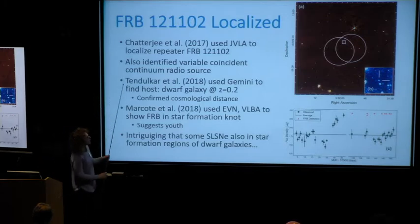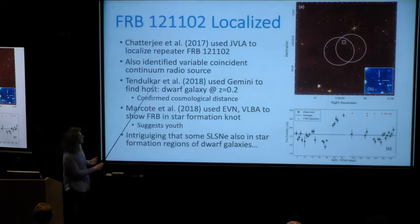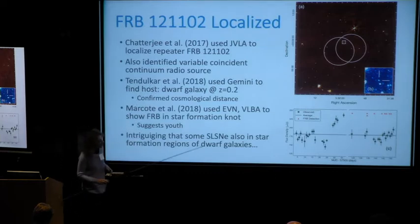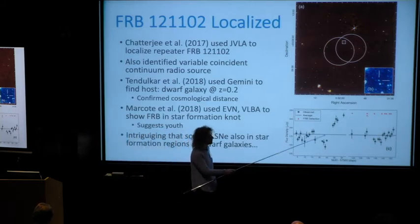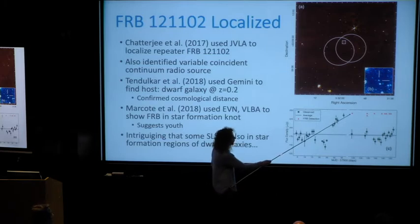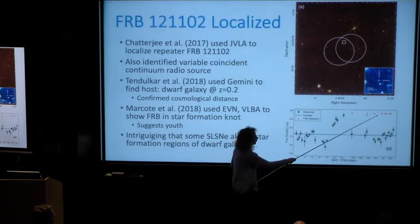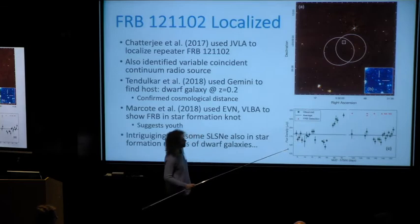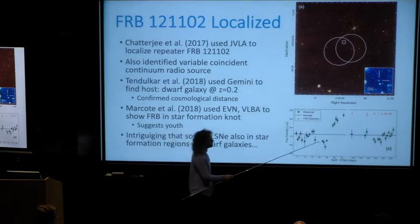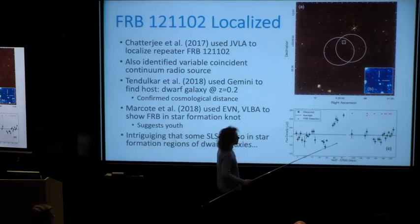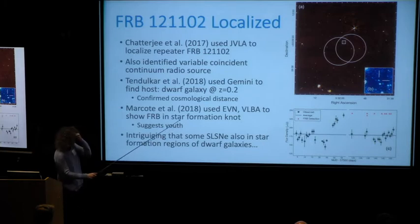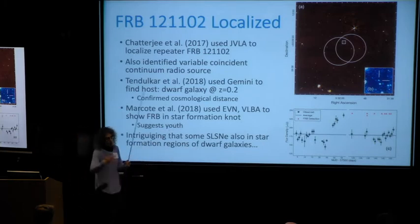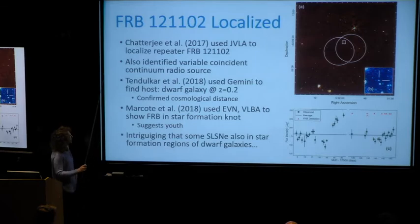Also coincident with the FRB is a continuum radio source, which is variable. The red points mark when the FRB had its bursts, and the variation in the continuum radio source doesn't seem to correlate with those bursts, which is curious. This variation could be a propagation effect; we're not really sure.